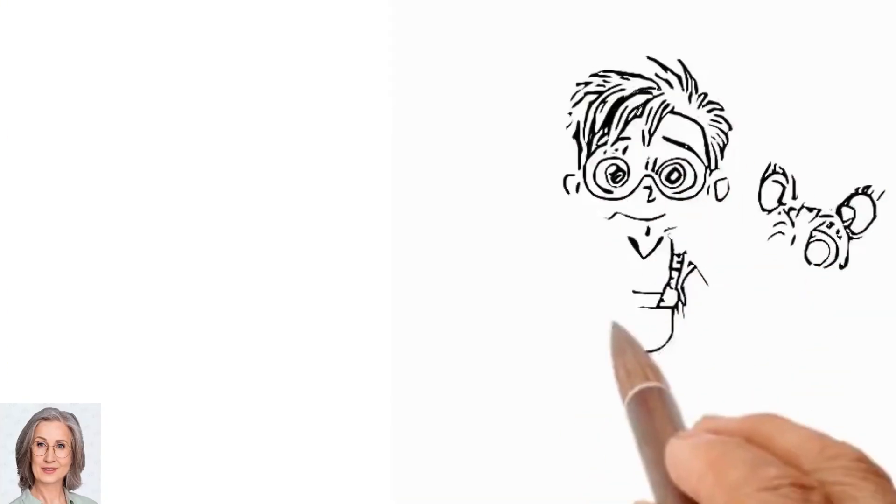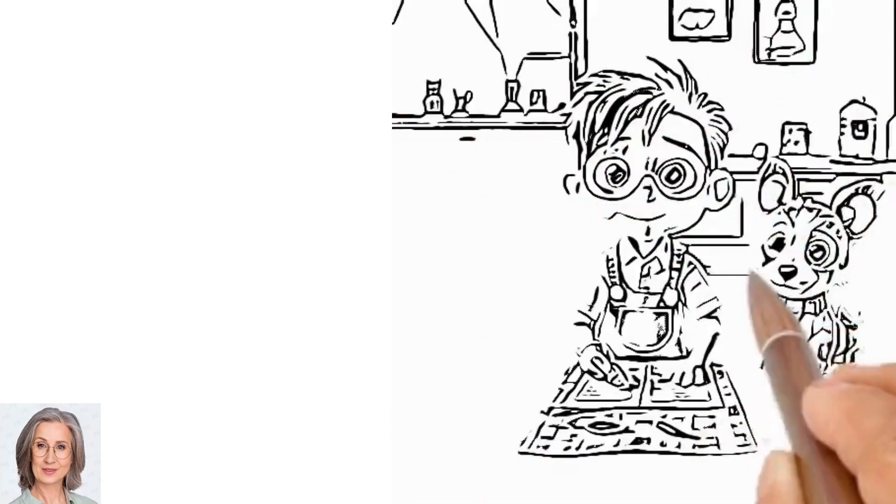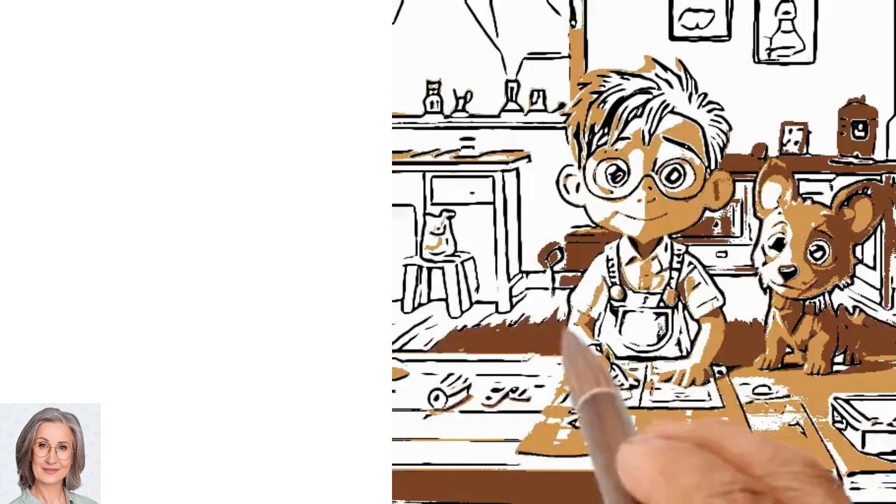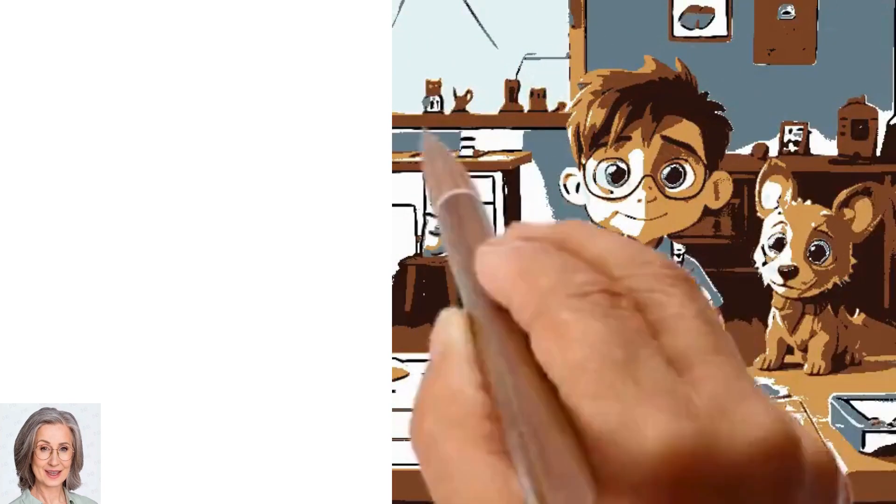He decided to build his own kite, and he spent the next few days gathering materials and working on his design. Billy had a little dog named Sparky who was always by his side.